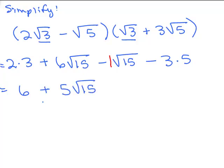That does not mean 11 square roots of 15. 6 is all by itself — it's a whole number — and 5 square roots of 15 is like another animal. Minus the 3 times 5 is 15. Look: I've got a 6 and a minus 15, and I can put those together.